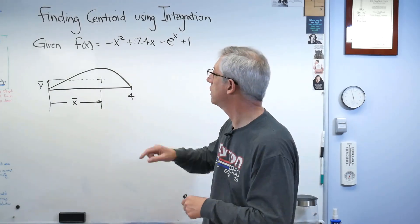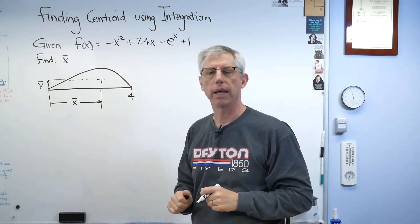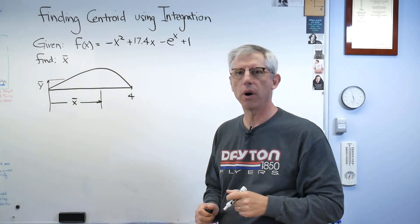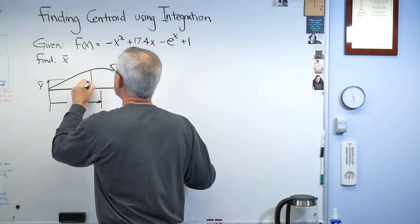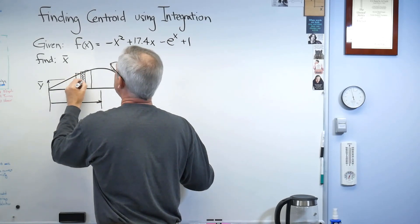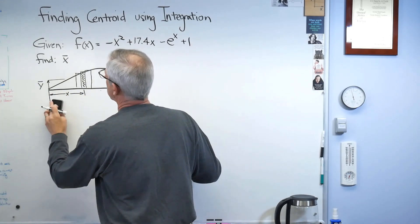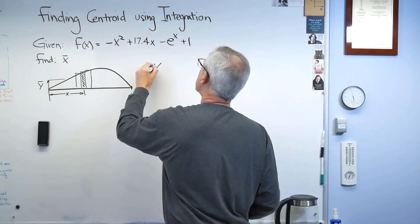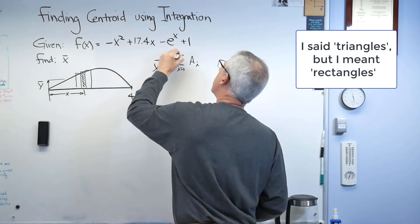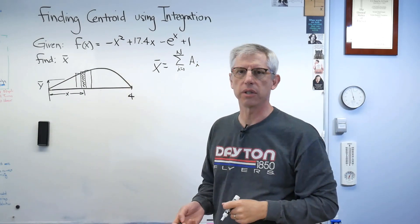So let's find x-bar. We've got the function. The way I would do this, treating it as a composite shape, is to cut it up into a bunch of approximate little rectangles. The definition of x-bar is the sum of all the areas of those rectangles — from i equals 1 to N, where N is the number of boxes. It's an area times a distance: A sub i times x sub i. It's a moment — an area times a distance.